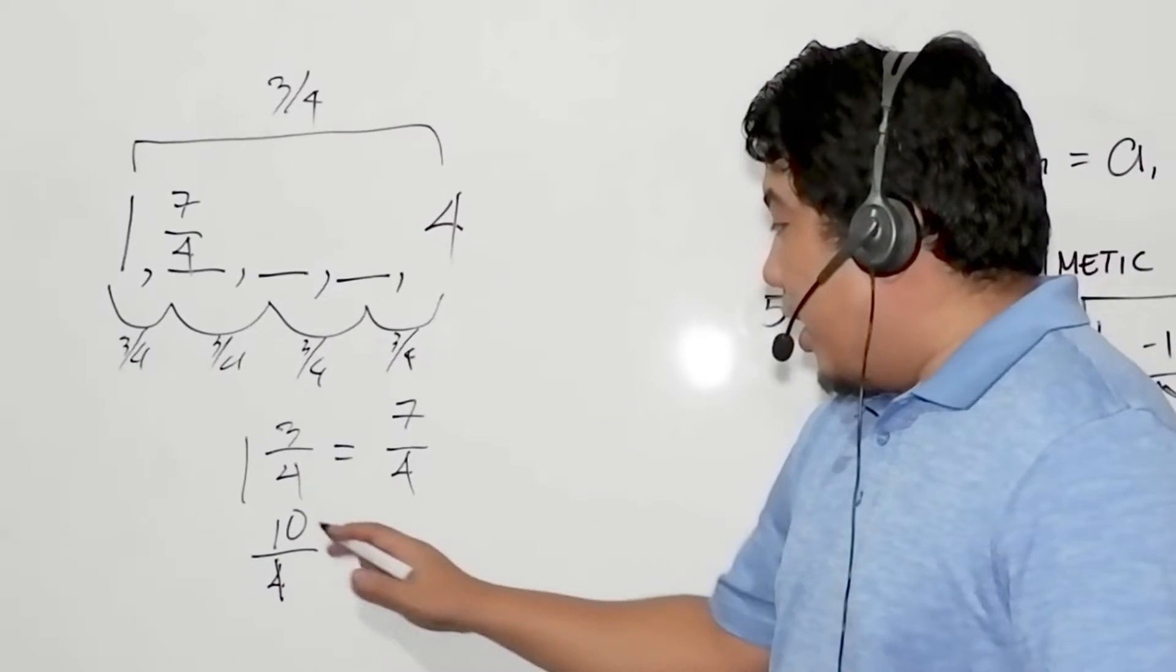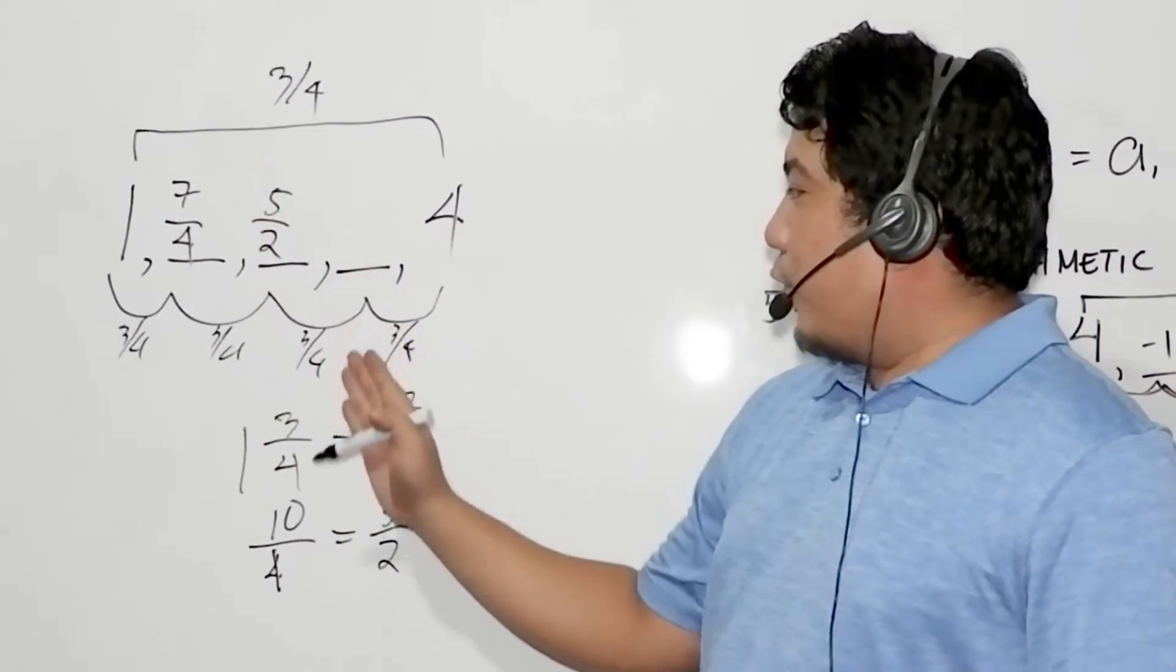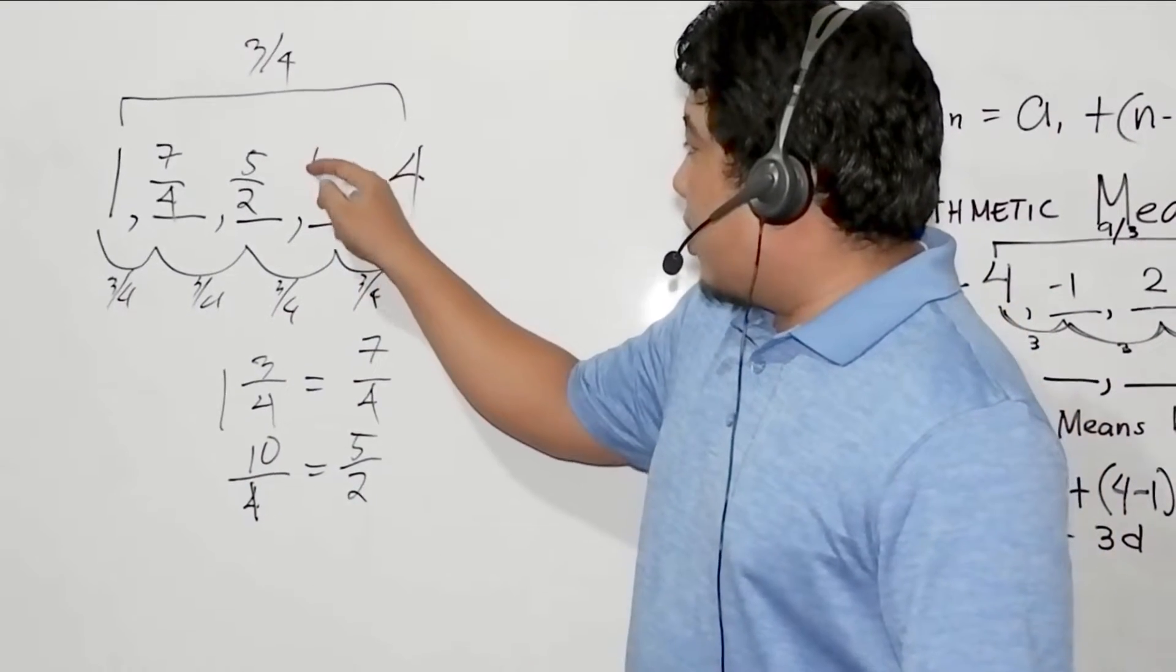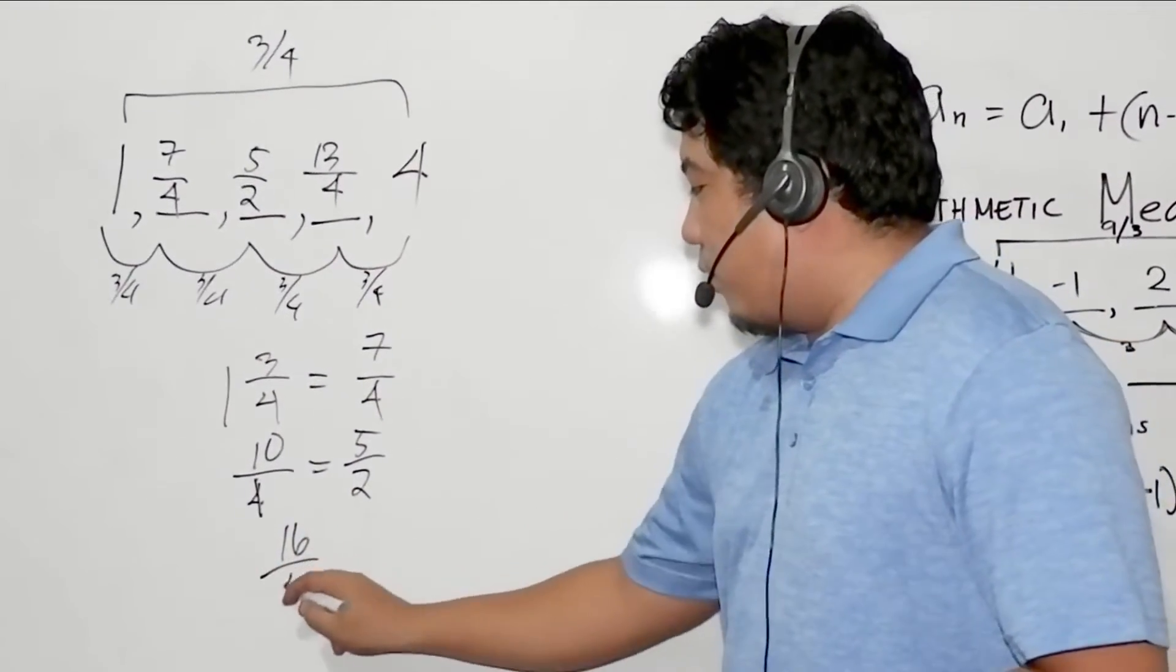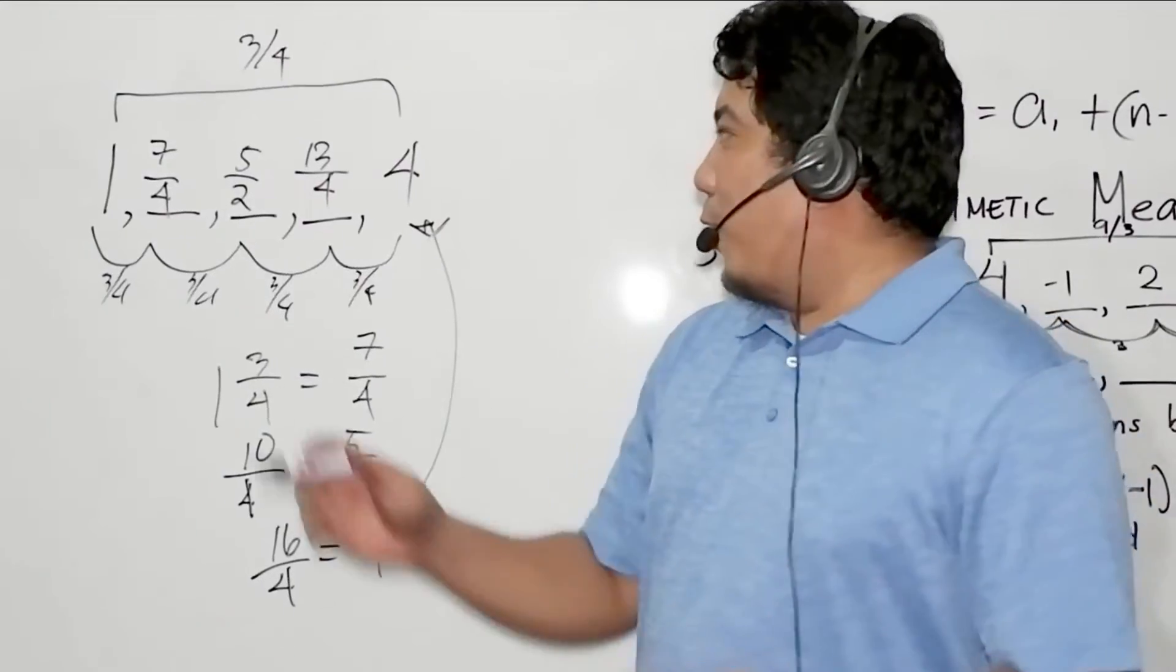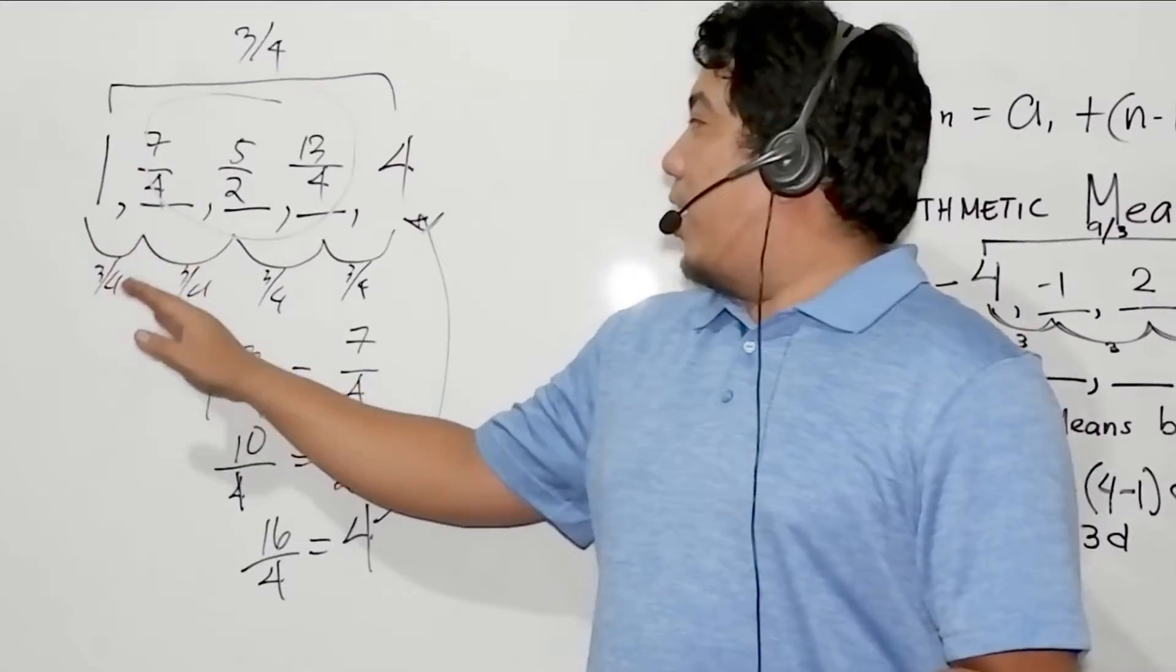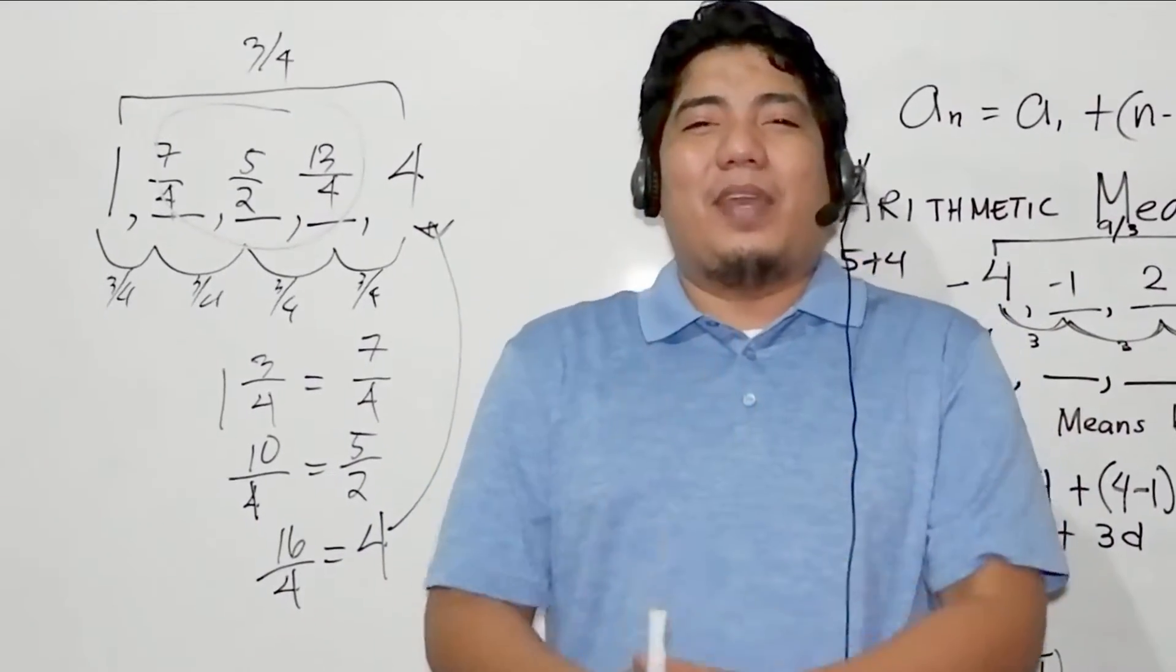Next, 5 over 2 plus 3 fourths. You can use 10 over 4 because they are just the same. 10 over 4 plus 3 fourths, that is 13 over 4. If you add this to 3 fourths, that will give you 16 over 4, which is equal to 4, and they are just the same. Therefore, what are your 3 arithmetic means in the given arithmetic sequence 1 and 4? The answers are 7 over 4, 5 halves, and 13 over 4 by just using our simple and very easy technique.